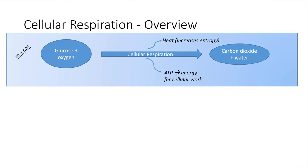This is an overview showing basically how cells can obtain energy from fuel molecules. Cells can take glucose and break it down through the process of cellular respiration in order to produce energy for work. That energy is in the form of ATP, and in the process, the cell makes some waste products: carbon dioxide and water. For the rest of this module, we're going to focus in on this process of cellular respiration.